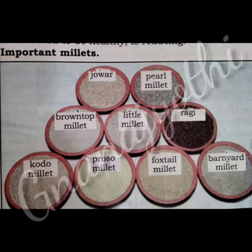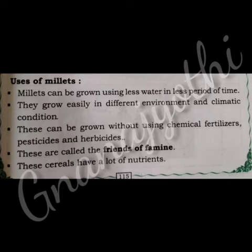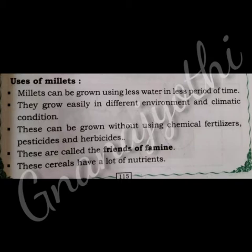Now we learn about uses of millets. Millets can be grown using less water in a less period of time. They grow easily in different environments and climatic conditions. These can be grown without using chemical fertilizers, pesticides, and herbicides. These are called the friends of famine. These cereals have a lot of nutrients and are very good for our health.